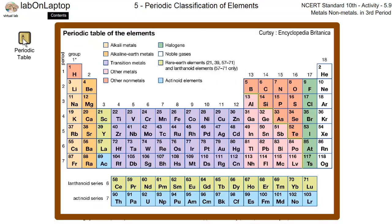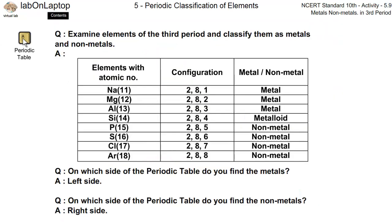Here you have a periodic table, you can open it for periodic table. So what have we given? Metals and non-metals in 3rd period.